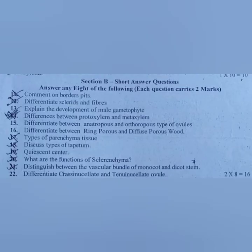Section B. Short answer questions. Answer any eight of the following, each question carries two marks. 11. Comment on bordered pits. 12. Differentiate sclereids and fibers. 13. Explain the development of male gametophyte. 14. Differences between protoxylem and metaxylem. 15. Differentiate between anatropous and orthotropous types of ovules. 16. Differentiate between ring porous and diffuse porous wood.